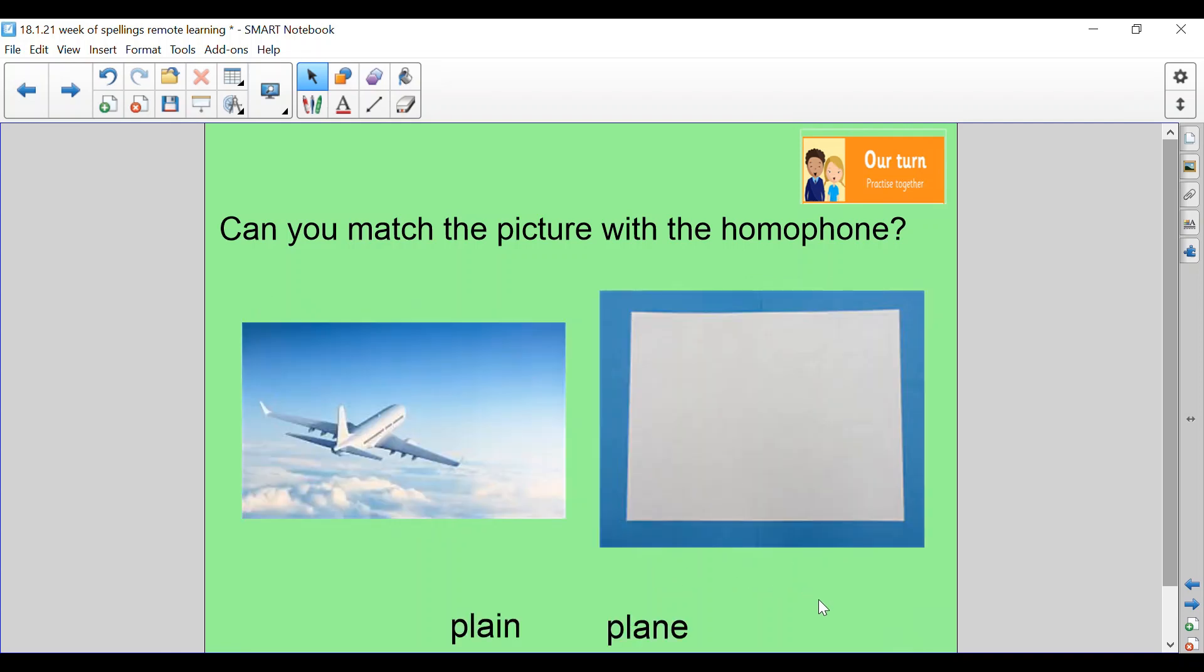The last one is plane. Here we've got a plane flying in the sky. And here we've got a plain piece of paper. Which plane goes with which picture? Well done. A plain piece of paper. Can you say the letter names with me? P-L-A-I-N. Plain. Then we've got a plane that flies in the sky. With the letters P-L-A-N-E. Plane.